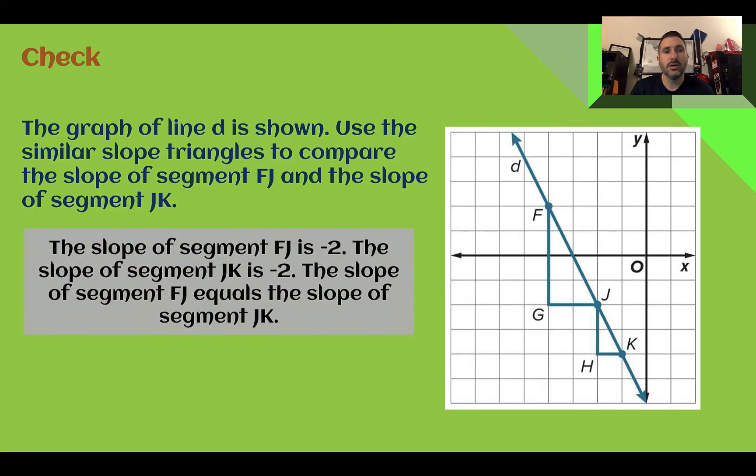Check your answer. So you should have found that the slope of segment FJ is negative two, and the slope of segment JK is also negative two. They have equal slopes, which is good because they are similar slope triangles. So FJ went down four and over two. So negative four over two as a ratio ends up being a negative two. And JK went down two over one again, negative two over one is negative two. So both have a slope in the triangle of negative two, meaning line D ends up having a slope of negative two.